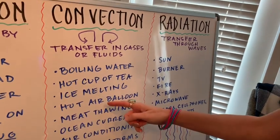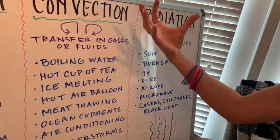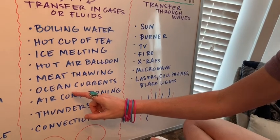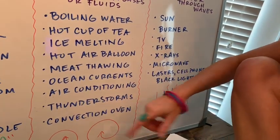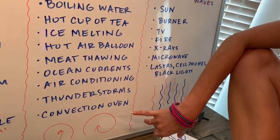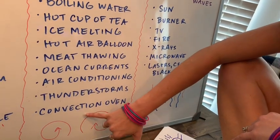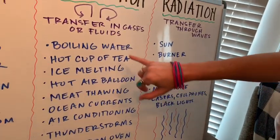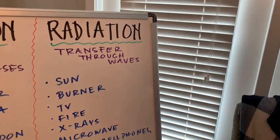Hot air is always going to rise — that's another example of convection. What about a hot air balloon? The way those work with hot air rising inside. Ocean currents also work like that. Air conditioning in the house and thunderstorms are another example of convection currents, because hot air is always rising and swirling around in the atmosphere. Convection ovens are another example. Remember, convection is always transfer of gases and fluids.